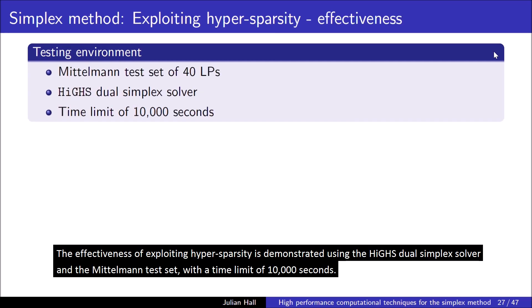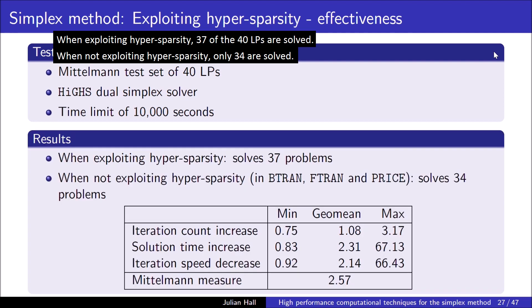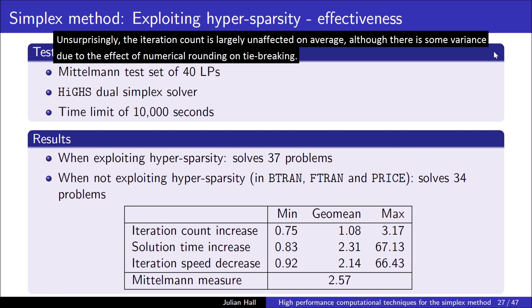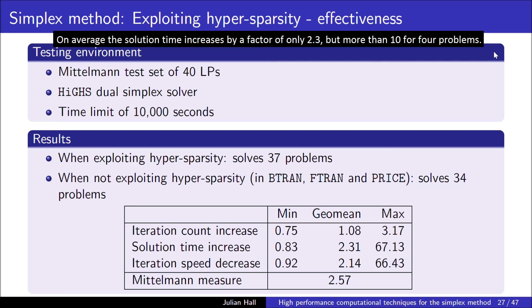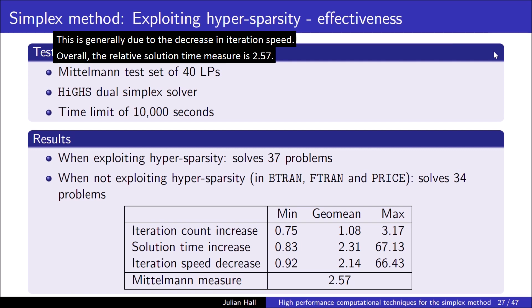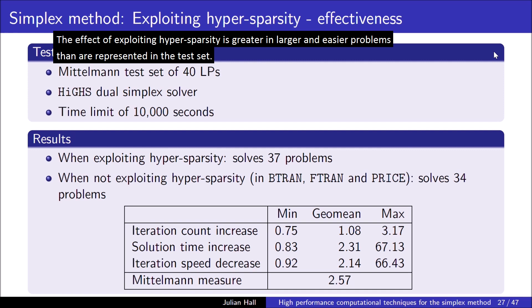The effectiveness of exploiting hypersparsity is demonstrated using the HiGHS dual-simplex solver and the Mittelman test set, with a time limit of 100,000 seconds. When exploiting hypersparsity, 37 of the 40 LPs are solved. When not exploiting hypersparsity, only 34 are solved. Unsurprisingly, the iteration count is largely unaffected on average, although there is some variance due to the effect of numerical rounding on tie-breaking. On average, the solution time increases by a factor of only 2.3, but by more than 10 for 4 problems. This is generally due to the decrease in iteration speed. Overall, the relative solution time measure is 2.57. The effect of exploiting hypersparsity is greater in larger and easier problems than are represented in the test set.